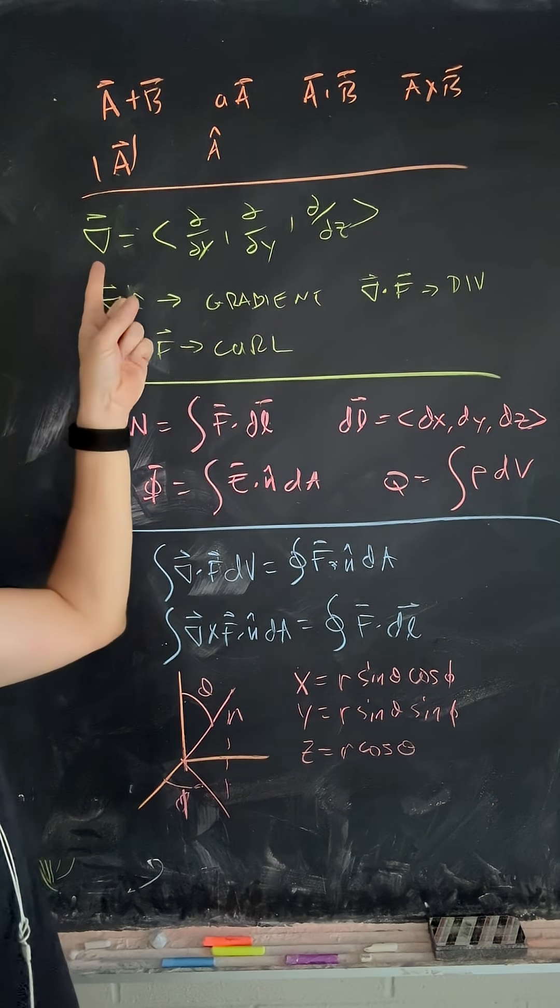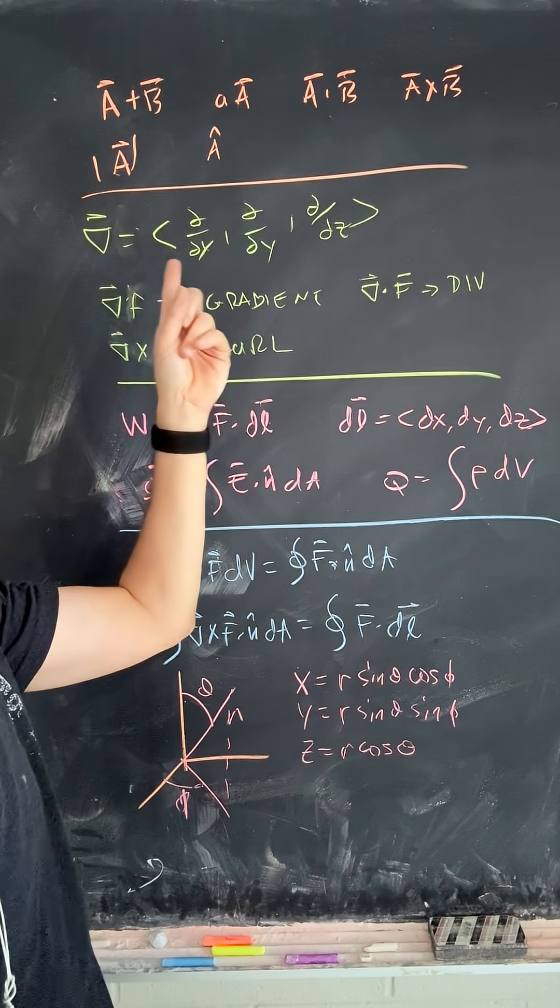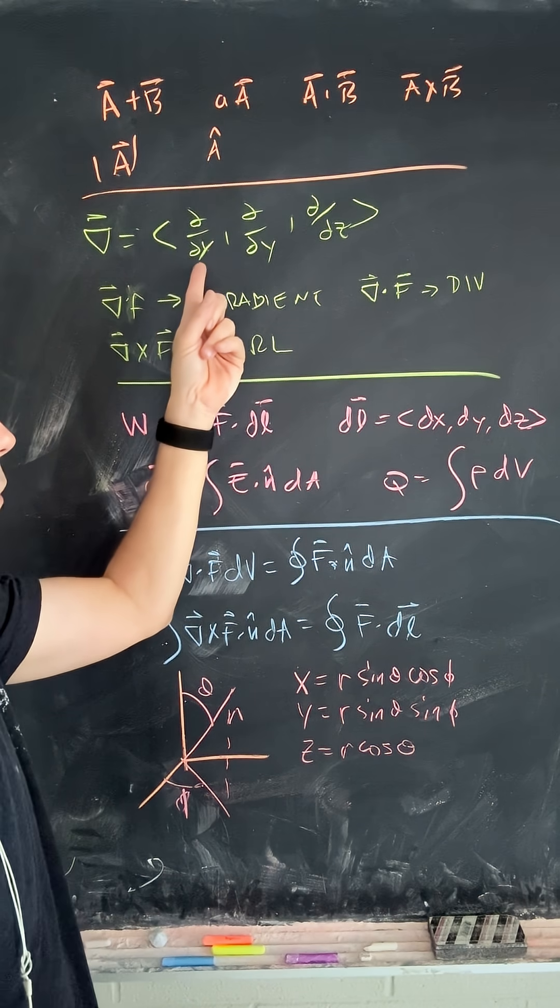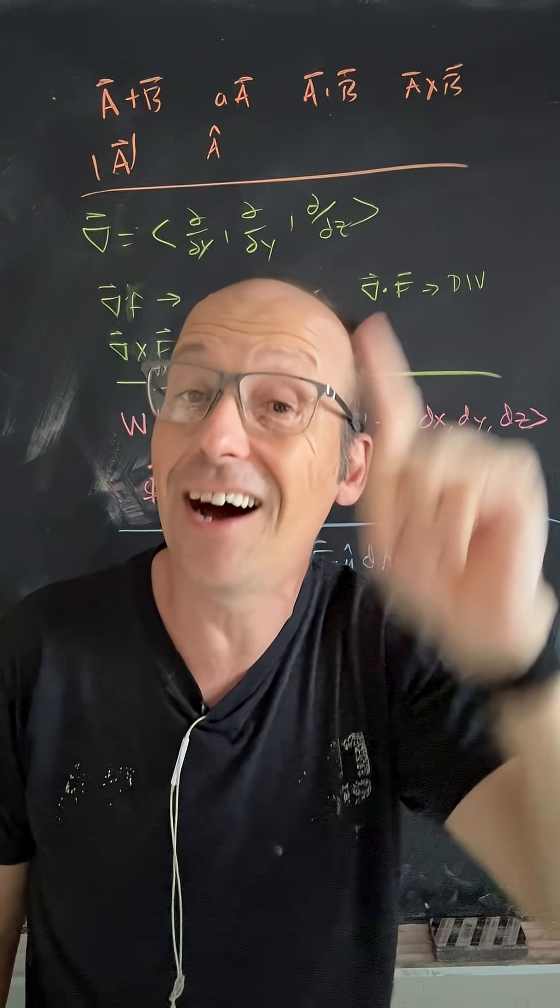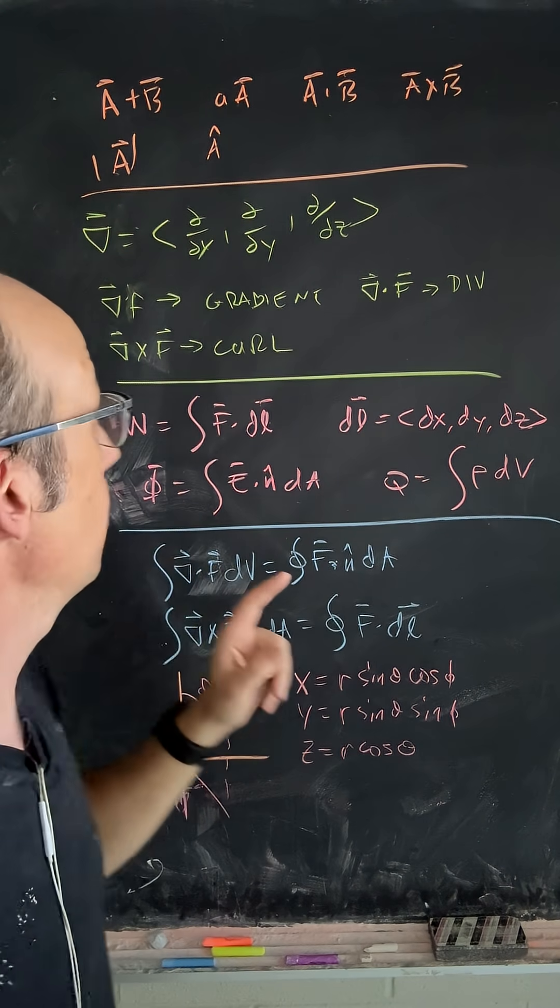Next, we have these derivatives of vectors. So we have the del operator in Cartesian coordinates. It's pretty simple, partial with respect to x, y, and z in the x, y, and z directions. Not true for spherical coordinates. You do need to know that one too, but look it up. You don't need to memorize it.